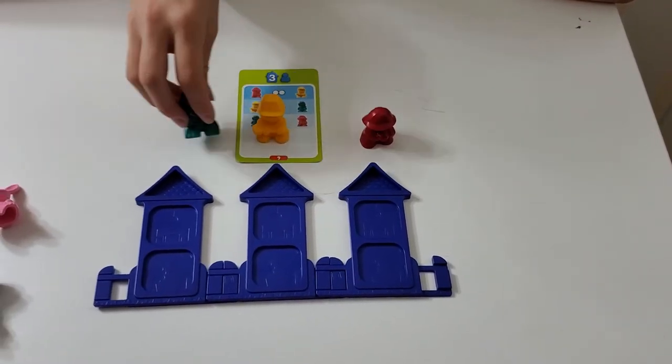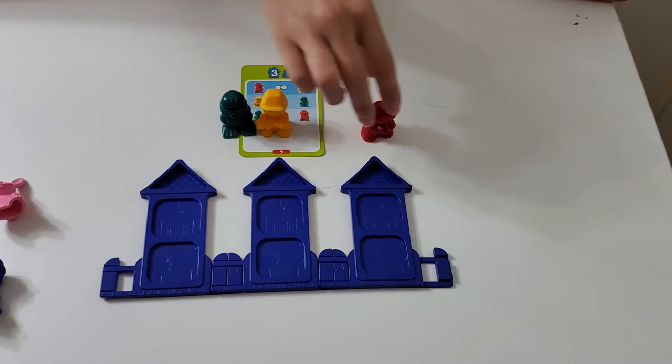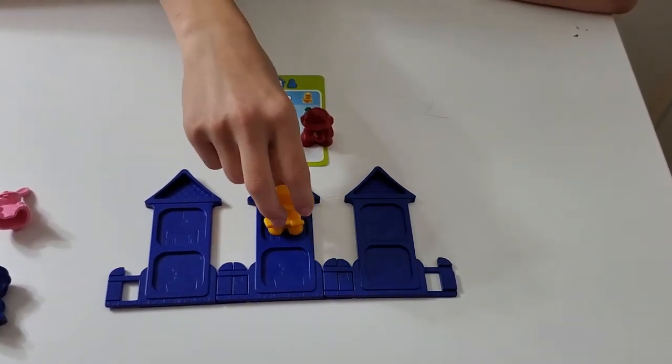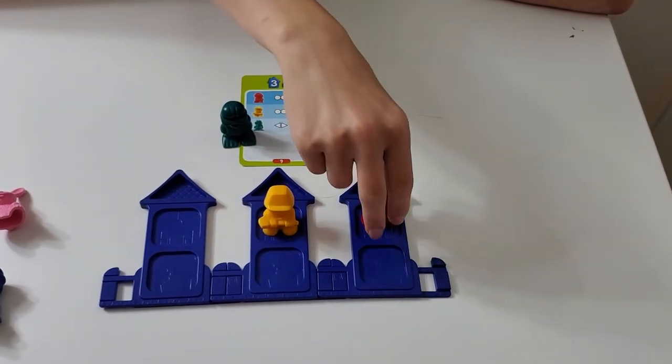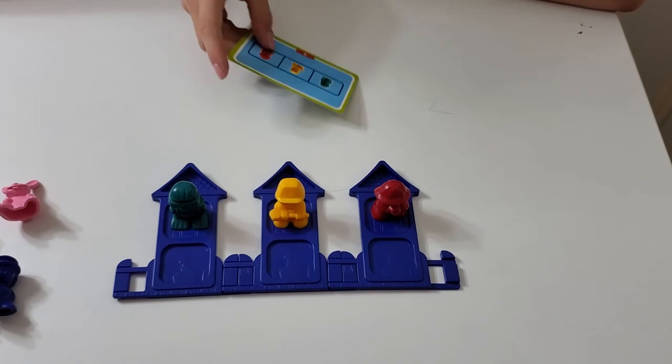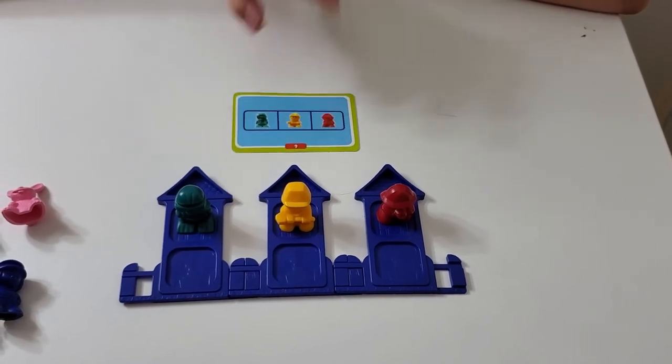Yellow and green are also neighbors, and yellow and red are neighbors. That would mean yellow has to go here, red has to go here, and green has to go here. And that's right.